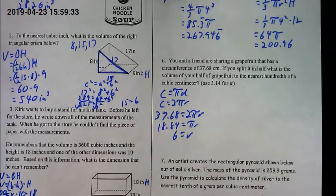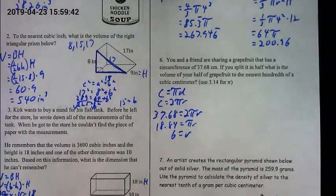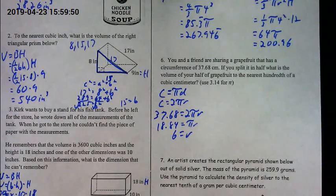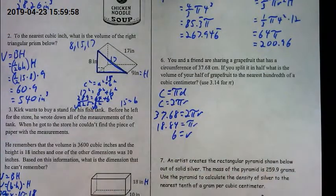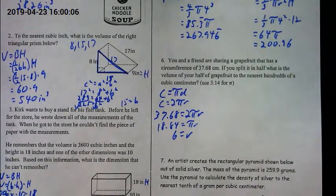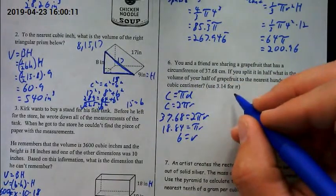Using C = 2πr: divide 37.68 by 2 and by 3.14, which gives a radius of 6. If you found the diameter of 12 first, that's fine — just make sure you convert to radius. A common mistake is plugging the diameter straight in where the formula needs the radius.